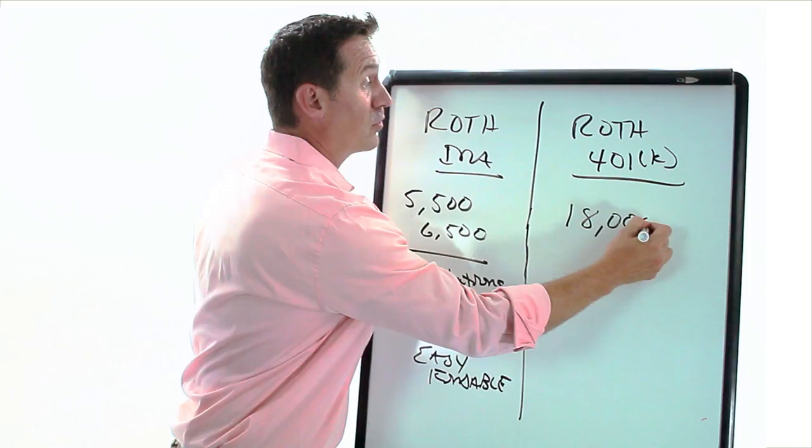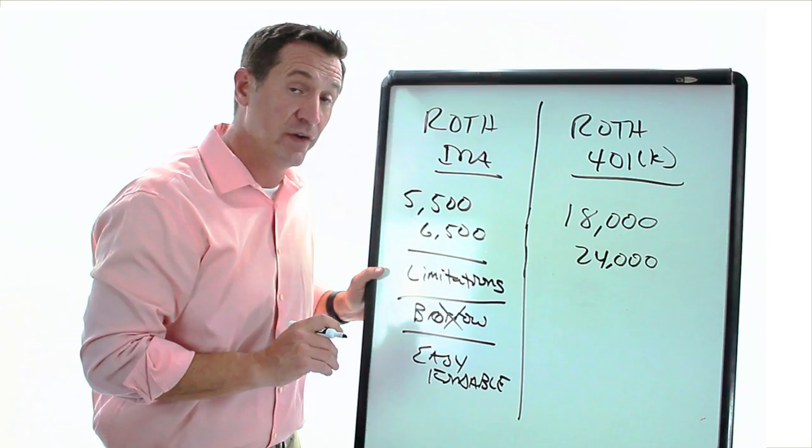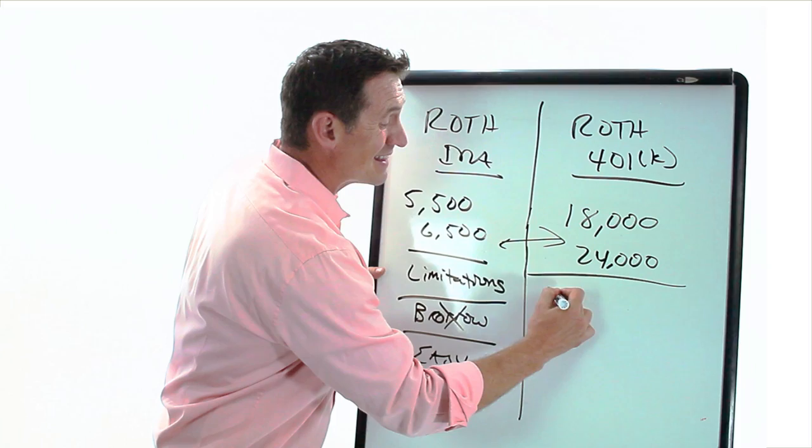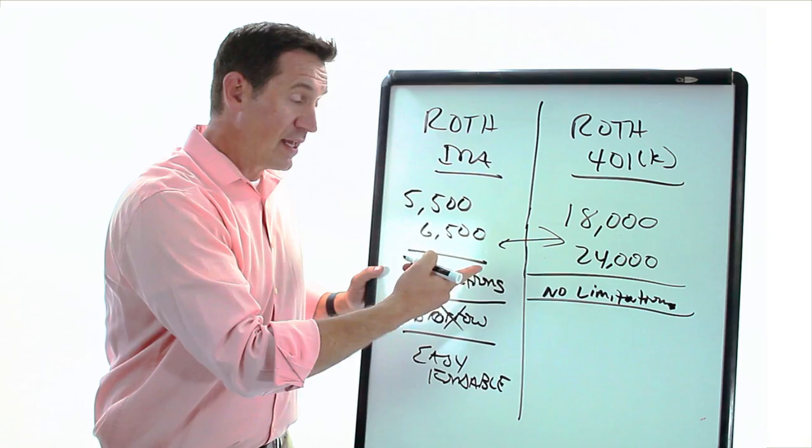Let's compare the Roth 401k. The first benefit we like is you can put away a lot more money - $18,000, or $24,000, that's a $6,000 makeup if you're over age 50, so you can see here kind of a big deal. The next benefit is there's no limitations here when it comes to your income level. You can make a million dollars and still put money in a Roth 401k. No limitations on income.